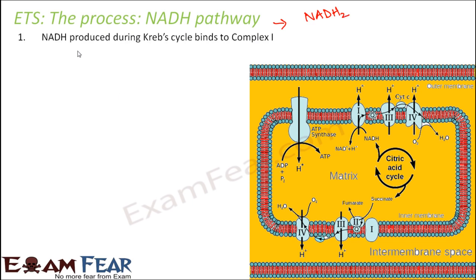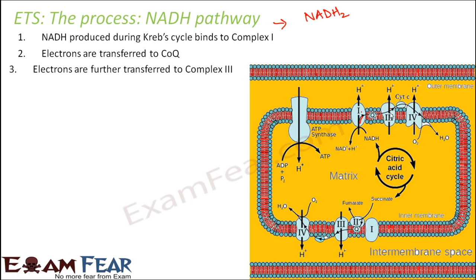NADH produced during Krebs cycle — and I mean all the steps up to and including Krebs cycle — binds to complex 1. Now electrons are transferred to coenzyme Q, that is ubiquinone, which is present between complex 1 and complex 3. This is a mobile carrier, so it will carry the electrons to complex 3, where they will be transferred.